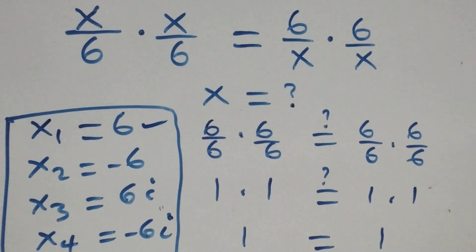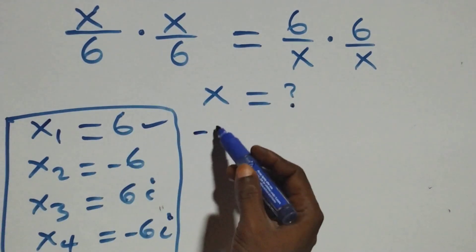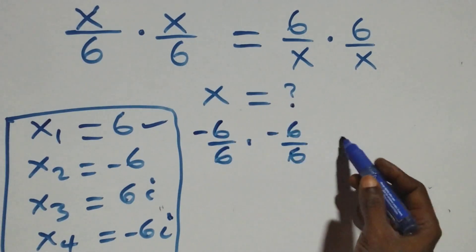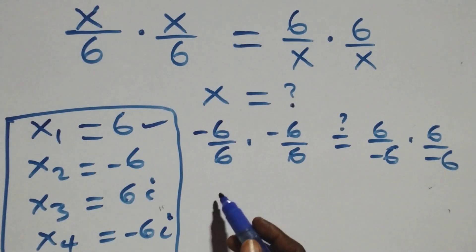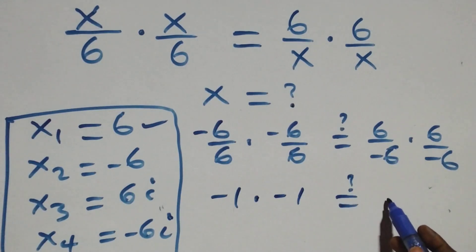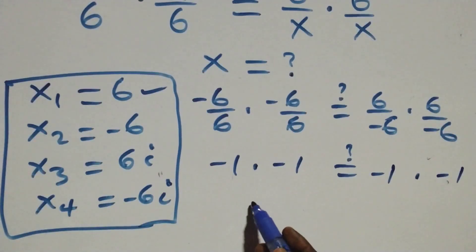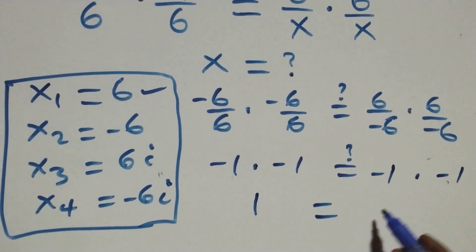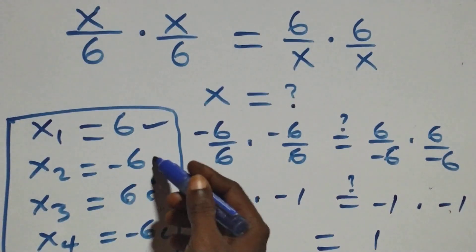For x = −6: substituting gives (−6/6)(−6/6) = (6/−6)(6/−6). That is (−1)(−1) = (−1)(−1), so minus times minus gives +1, and +1 = +1. Left-hand side equals right-hand side, so x = −6 also satisfies the equation.